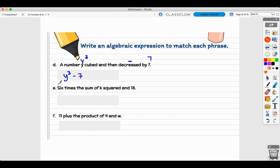We can do the same thing over here. Six times is multiplying the sum of K squared, which is K to the second, and 18. So you are adding these two together. Six times the sum of K squared and 18. This is going to be six parentheses K squared plus 18, because you're saying it's six times the sum of all of this. It's not saying six times K squared. It's saying six times the sum of all of that. So the parentheses need to happen there.